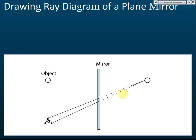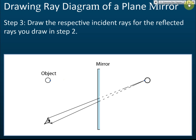Draw two straight lines from the chosen point on the image to the top of the eye and to the bottom of the eye. The lines behind the mirror should be dotted lines, and the lines in front of the mirror should be solid lines. Then draw the incident rays: from the corresponding point on the object to where each reflected ray meets the mirror surface.